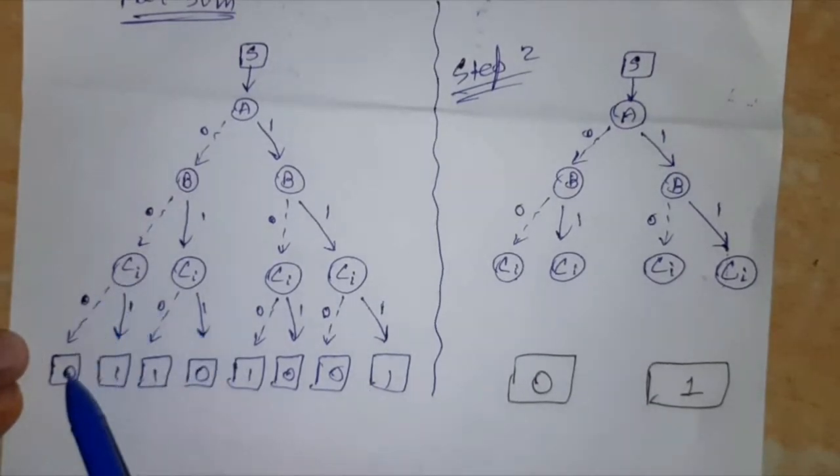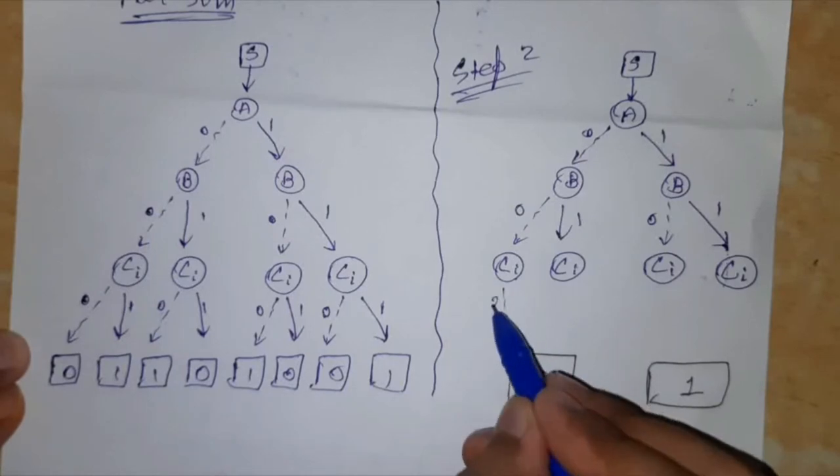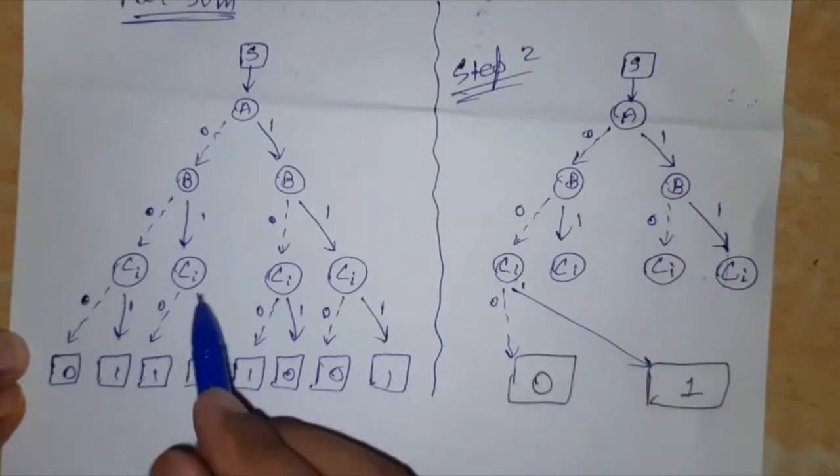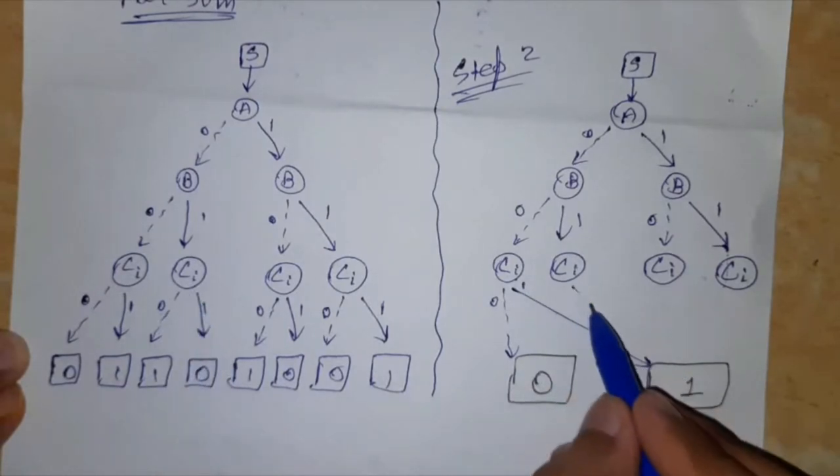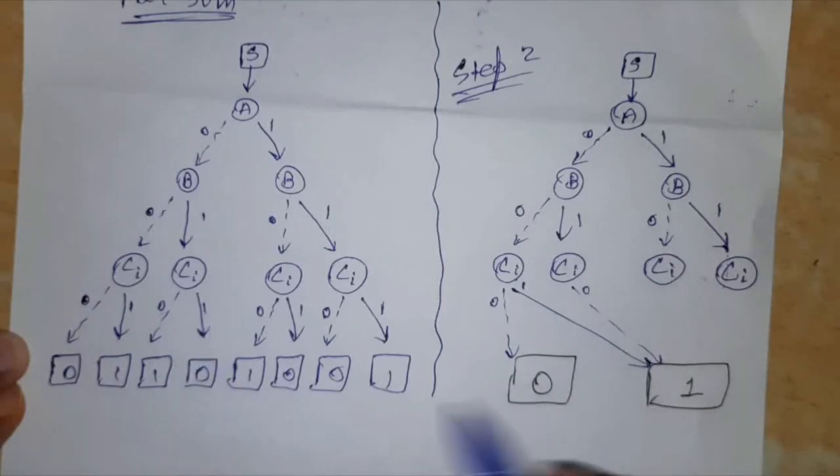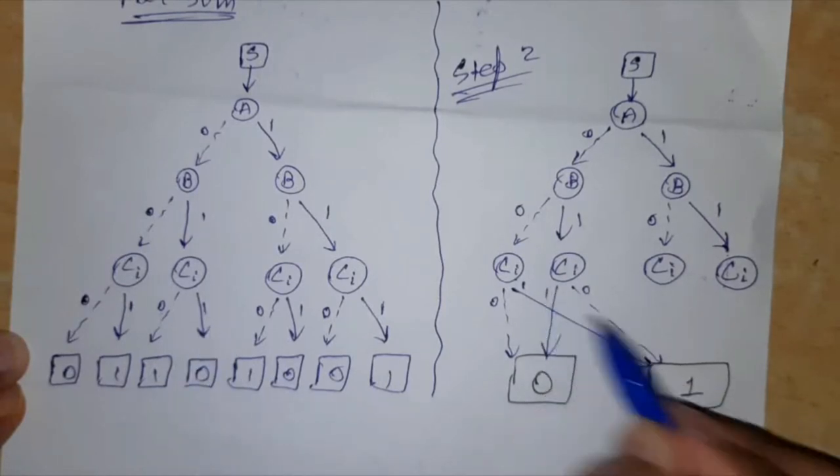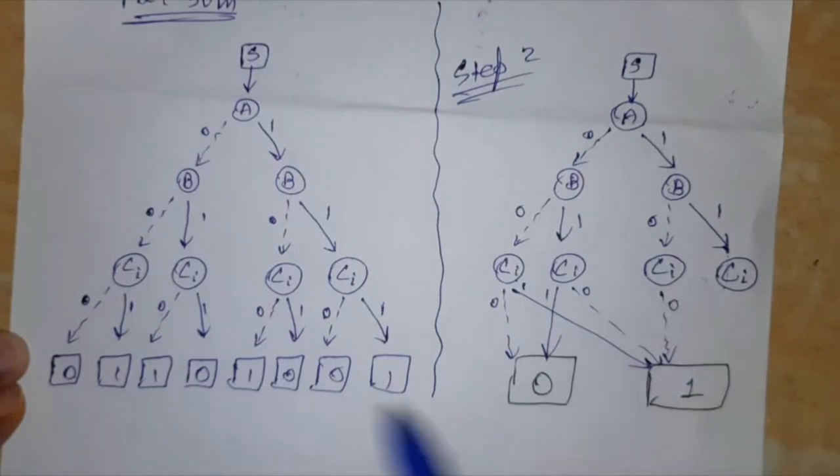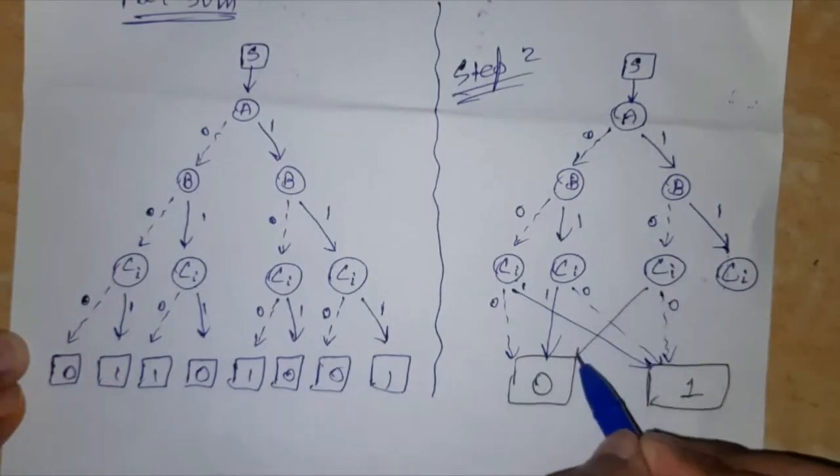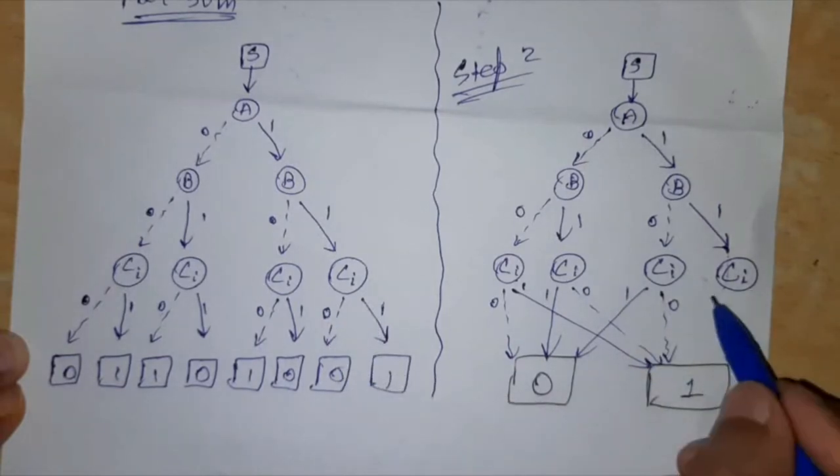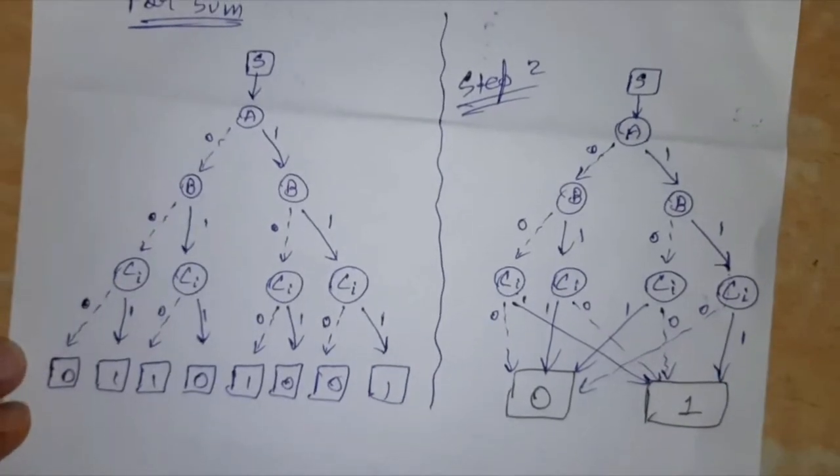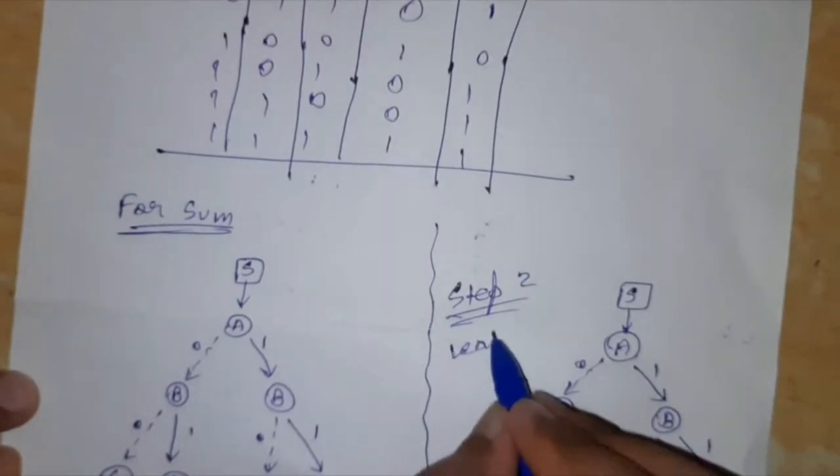So for 0 we are getting 0, for 1 it is getting 1, for 0 it's 1, for 1 it's 0. For 0 it's 0, for 1 it's 1. So this is the leaf removal step.